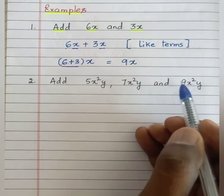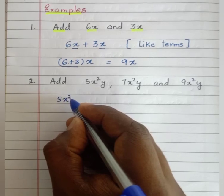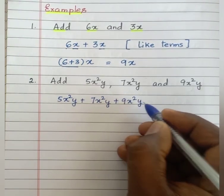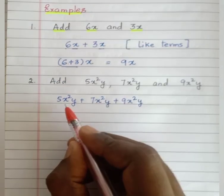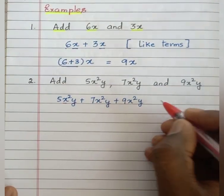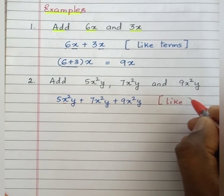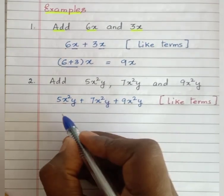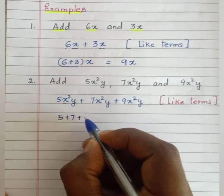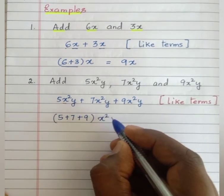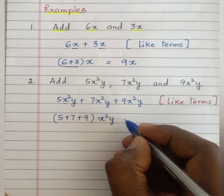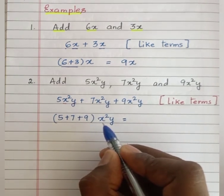Second example: add 5x²y, 7x²y, and 9x²y. All these terms are like terms because they have the same variable with the same exponent. Following Rule 1, we add the numerical coefficients: 5 plus 7 plus 9. Write the variable x²y as it is. 5 plus 7 is 12, and 12 plus 9 is 21, so we get 21x²y.